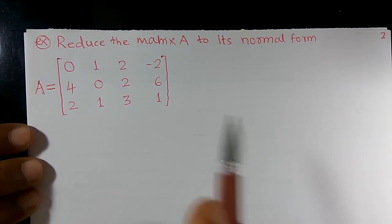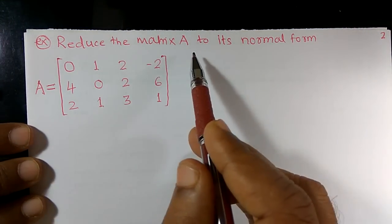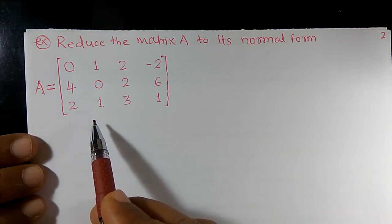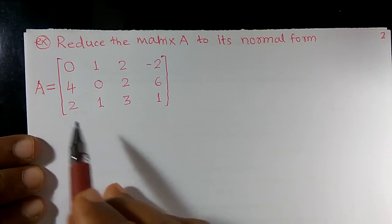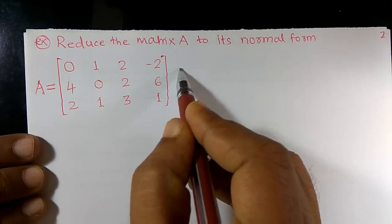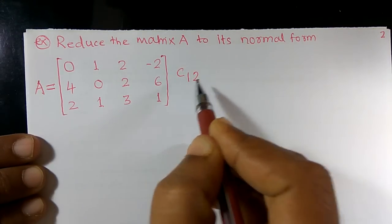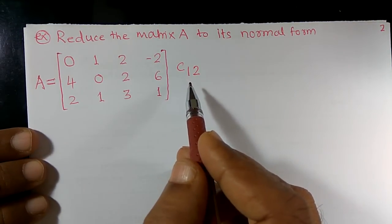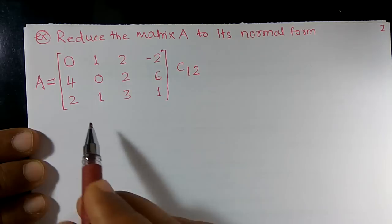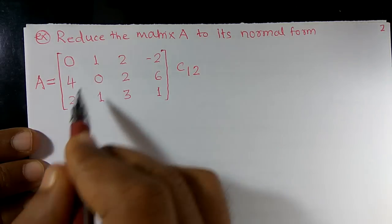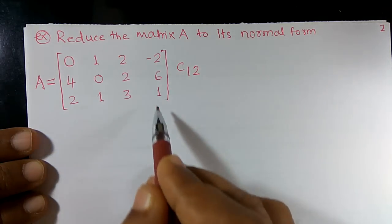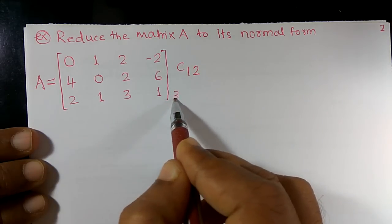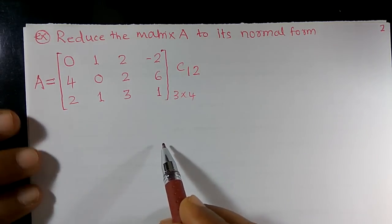Here, it is given: reduce the matrix A to its normal form. Now I am going to use elementary transformations. I want to use operator C₁₂, meaning I am going to interchange column 1 and column 2. The matrix has 4 columns and 3 rows, so it is of order 3×4.